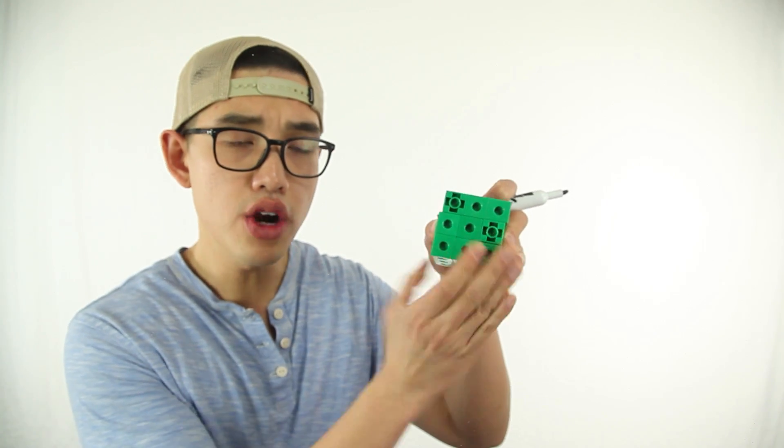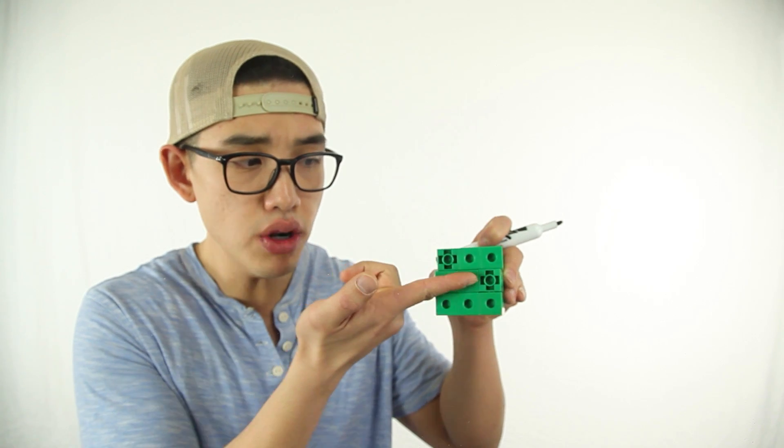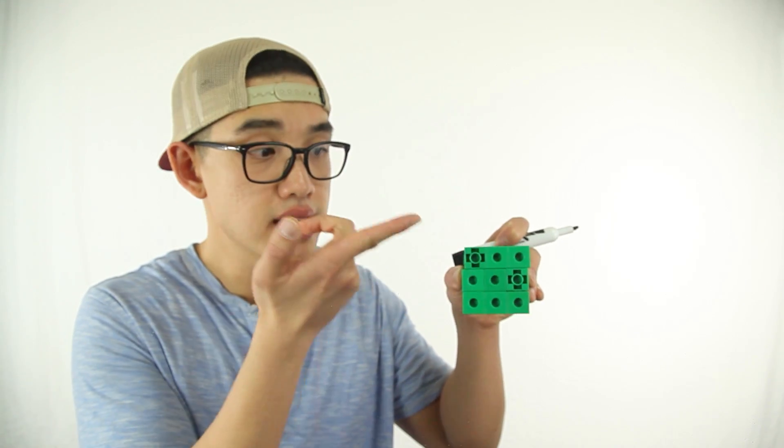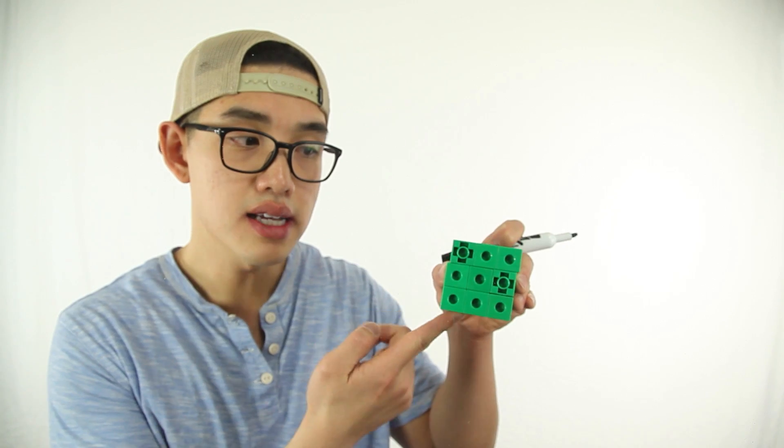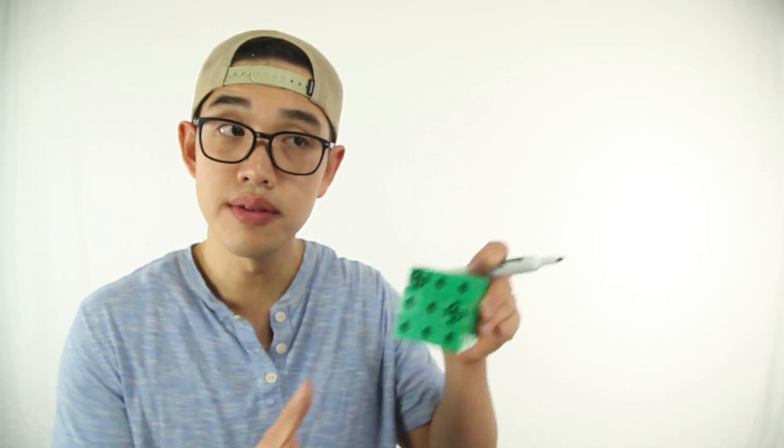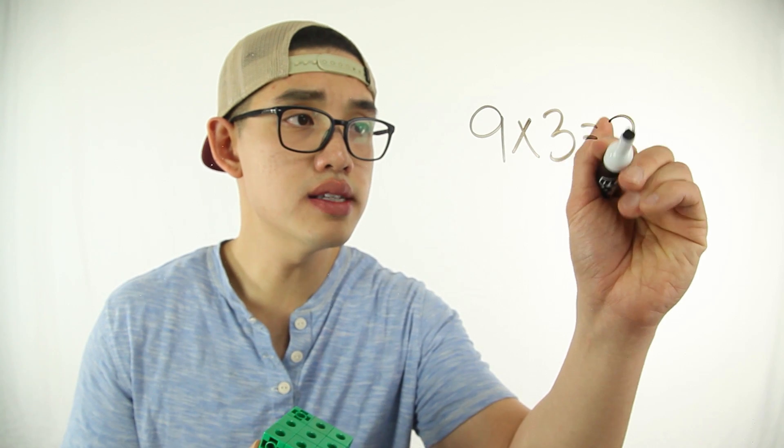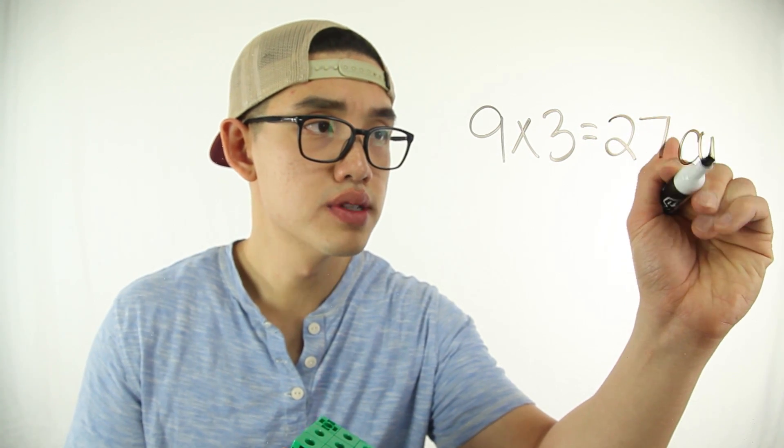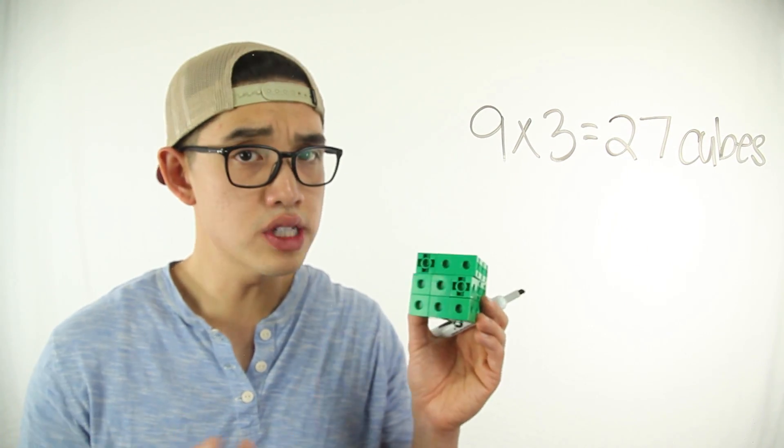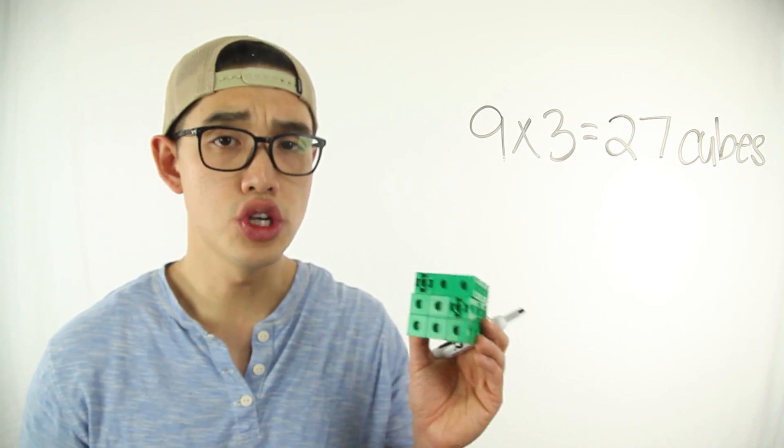And because this bottom layer is the same as this middle layer here and the same as this top layer right here, I can multiply 9 times the height, which is 3. So 9 times 3 is going to give me 27 cubes. So the volume of this cube is going to be 27 cubic units.